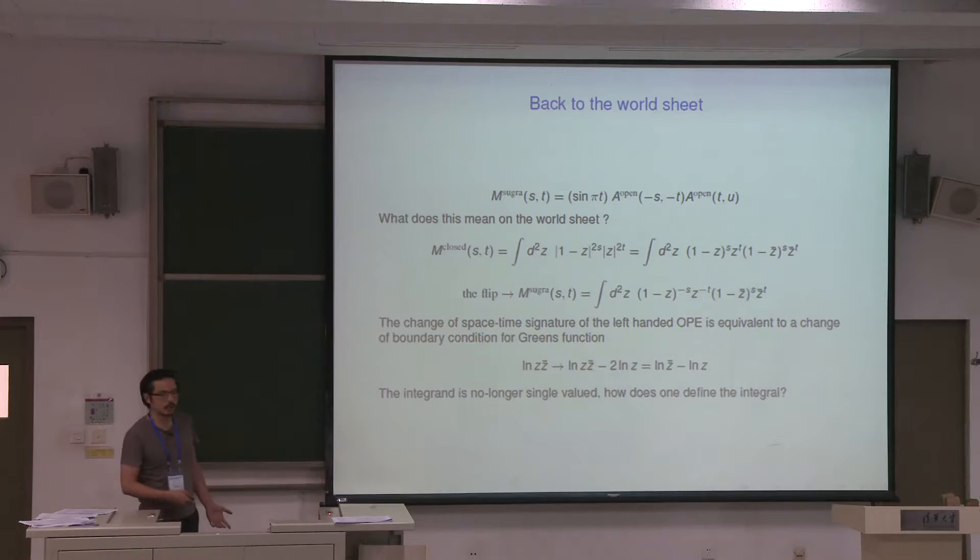If you add this extra homogeneous piece, then you get a Green's function where the left-handed part has an opposite sign with respect to the right-handed part. So this flipping of signature can be thought of as an operation on the world sheet: you're modifying your Green's function.